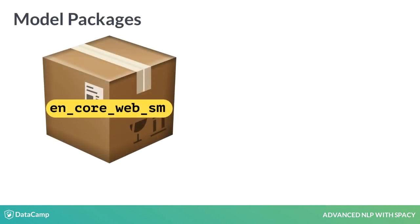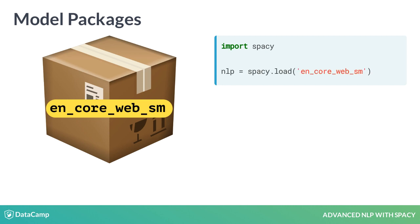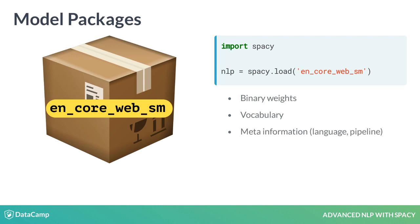spaCy provides a number of pre-trained model packages you can download. For example, the en-core-web-sm package is a small English model that supports all core capabilities and is trained on web text. The spaCy.load method loads a model package by name and returns an NLP object. The package provides the binary weights that enable spaCy to make predictions. It also includes the vocabulary and meta information to tell spaCy which language class to use and how to configure the processing pipeline.